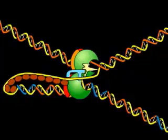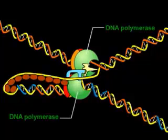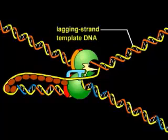In a replication fork, two DNA polymerases collaborate to copy the leading strand template and the lagging strand template DNA.